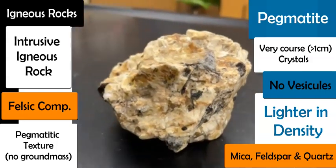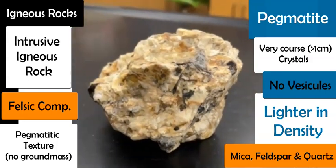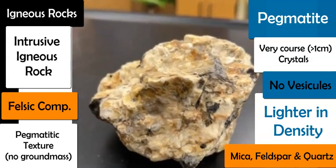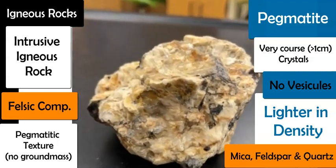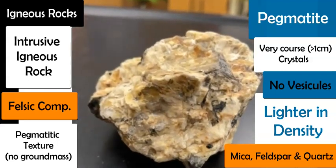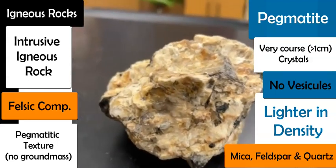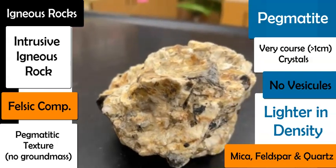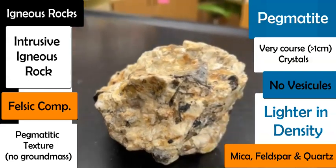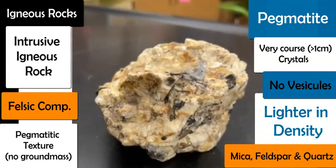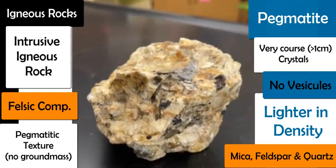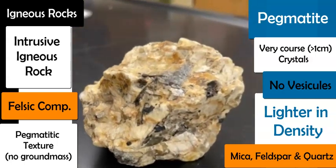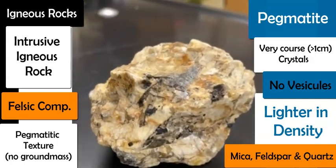The texture has no ground mass — it's just the crystals interlocking. The three main minerals are mica, feldspar, and quartz. This is very similar to granite in its composition, and pegmatite can be found in various metamorphic rocks and also some granites.